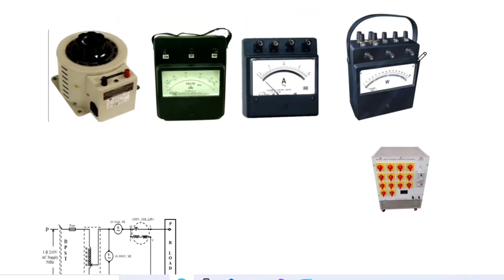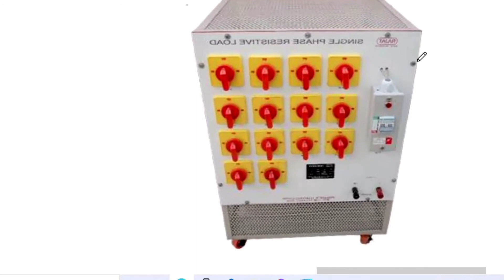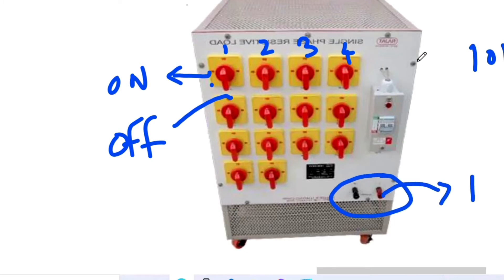Here is the resistive load. These are all the loads — load number 1, load number 2, 3, 4 — and different loads are applied by simply switching on. Down position is on; upper position is off. Gradually we can increase the load simply by switching on the load switches according to the current rating the manufacturer specifies. The load is increased up to 10 amps. The red color represents the phase terminal and black color represents the neutral terminal.